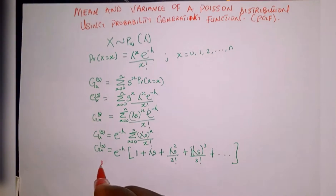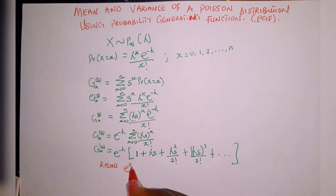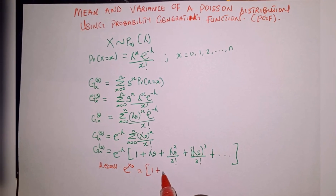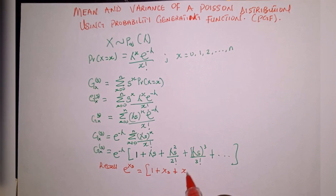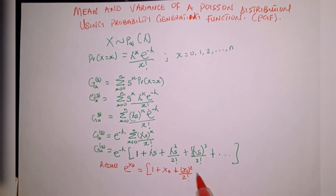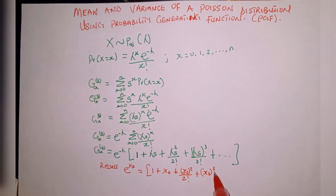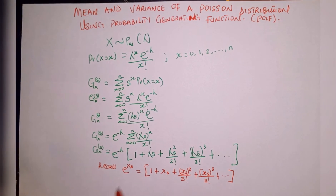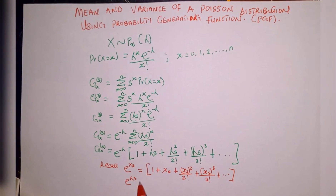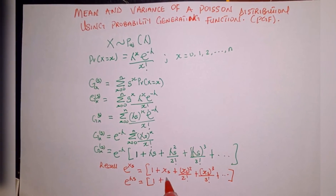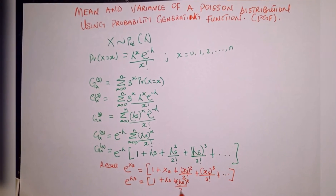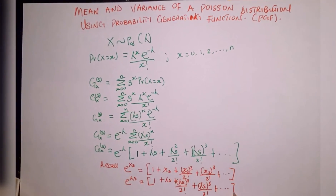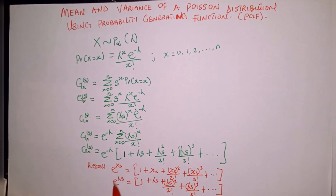We recall that e raised to the power of x s is the same as 1 plus x s plus (x s) squared over 2 factorial plus (x s) cubed over 3 factorial, and so on. So e raised to the power of lambda s is the same as 1 plus lambda s plus (lambda s) squared over 2 factorial plus (lambda s) cubed over 3 factorial, and so on.